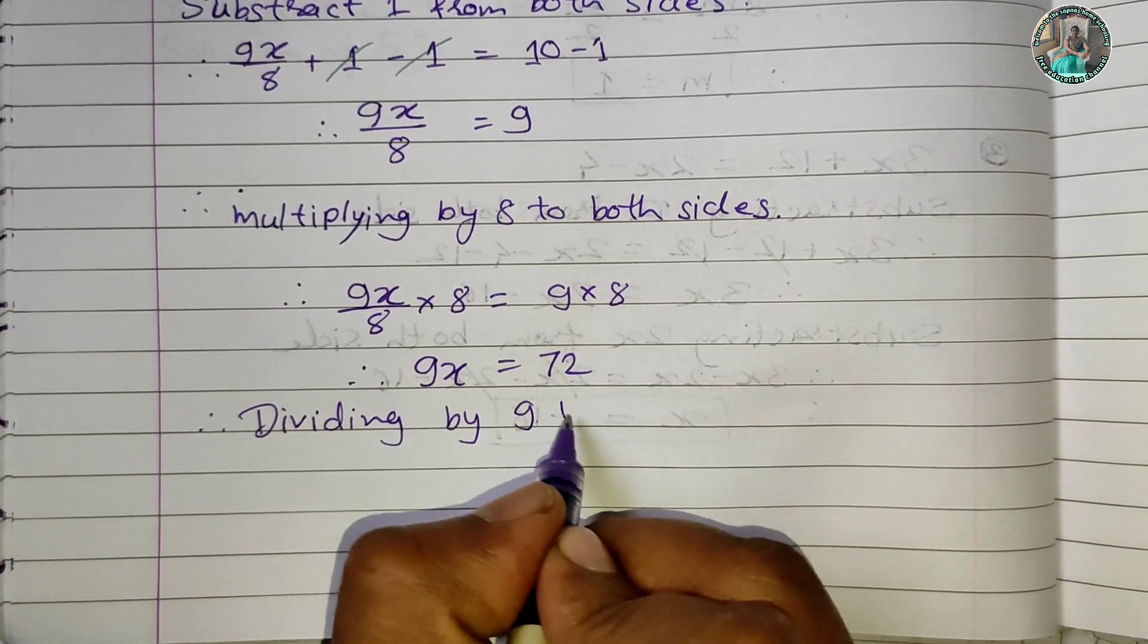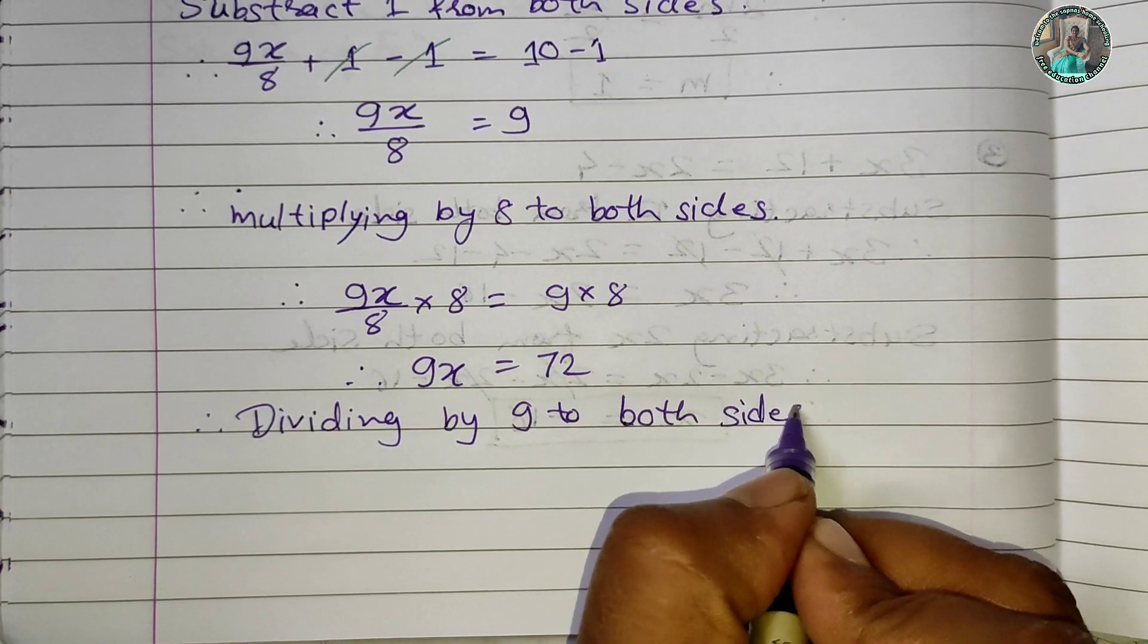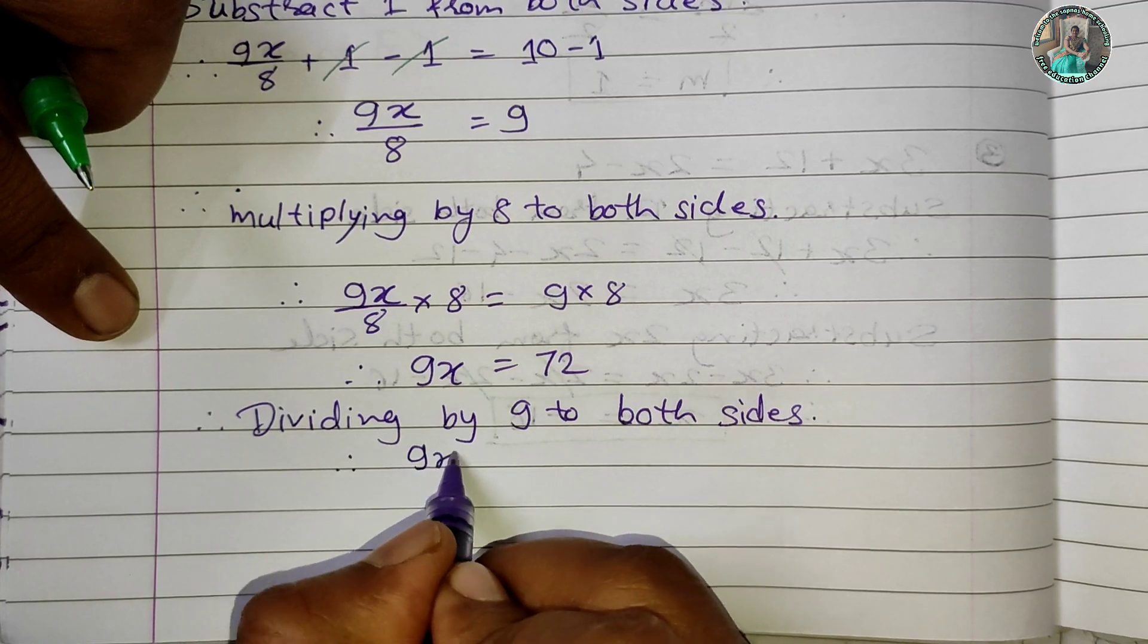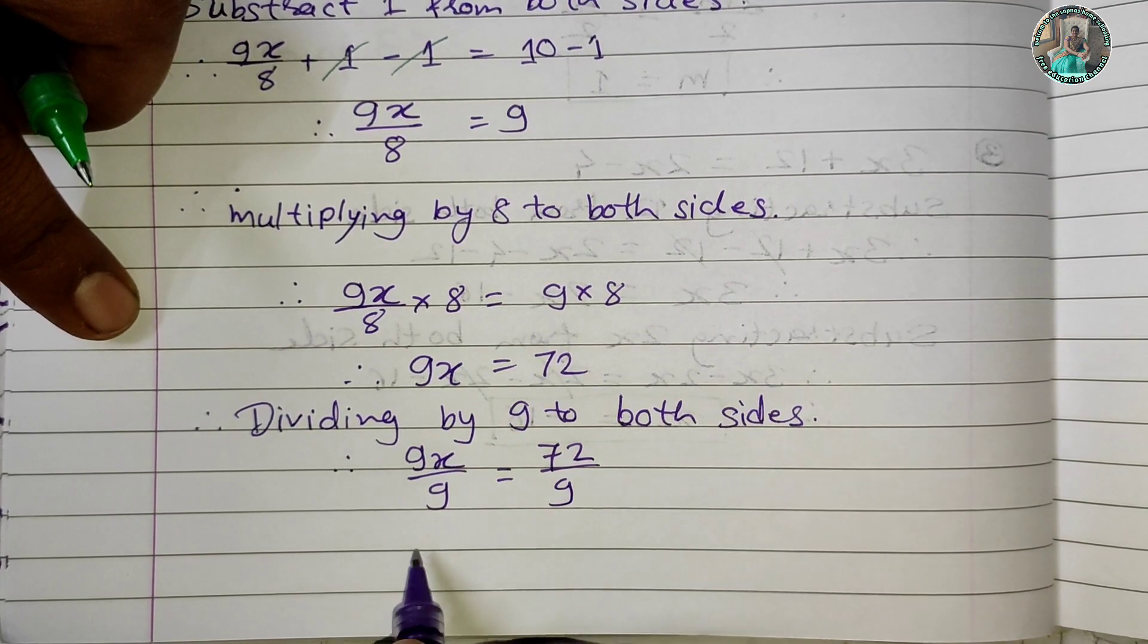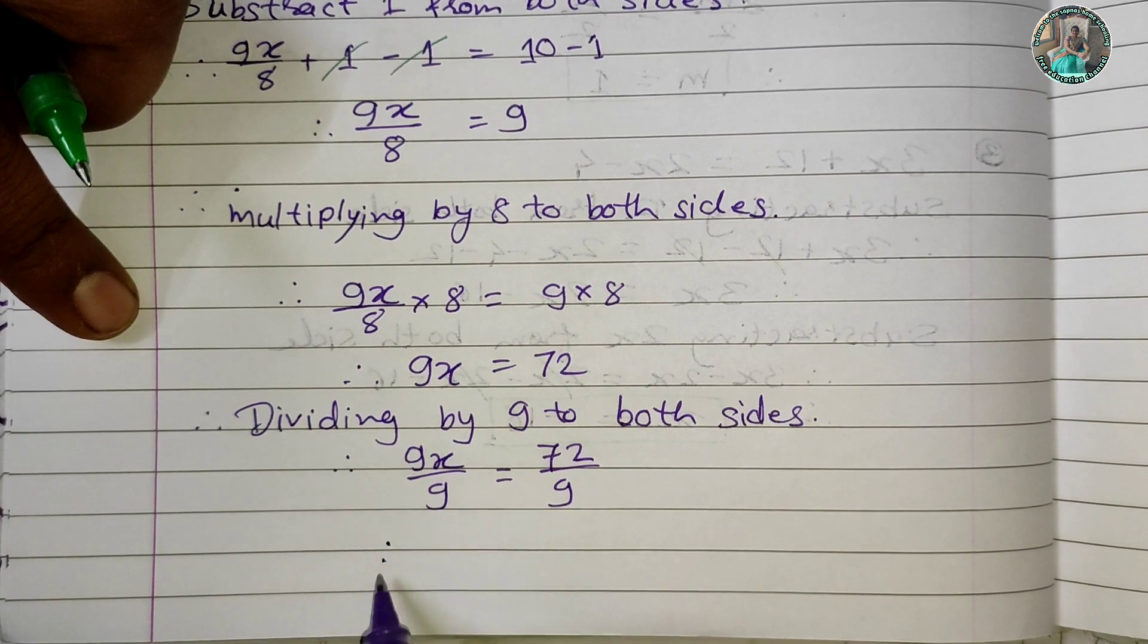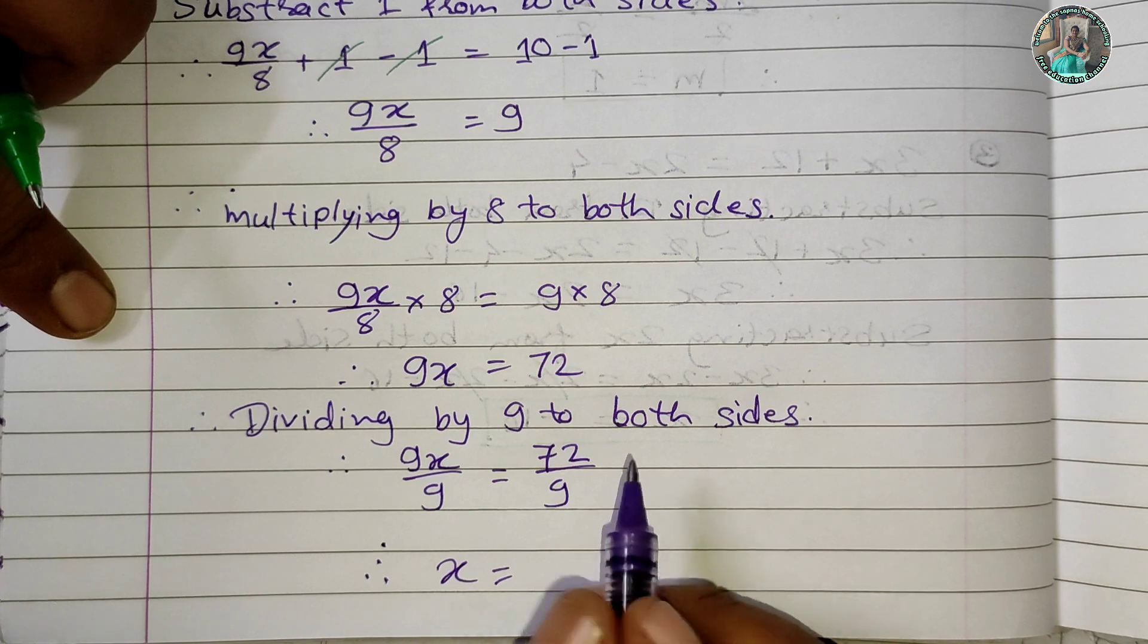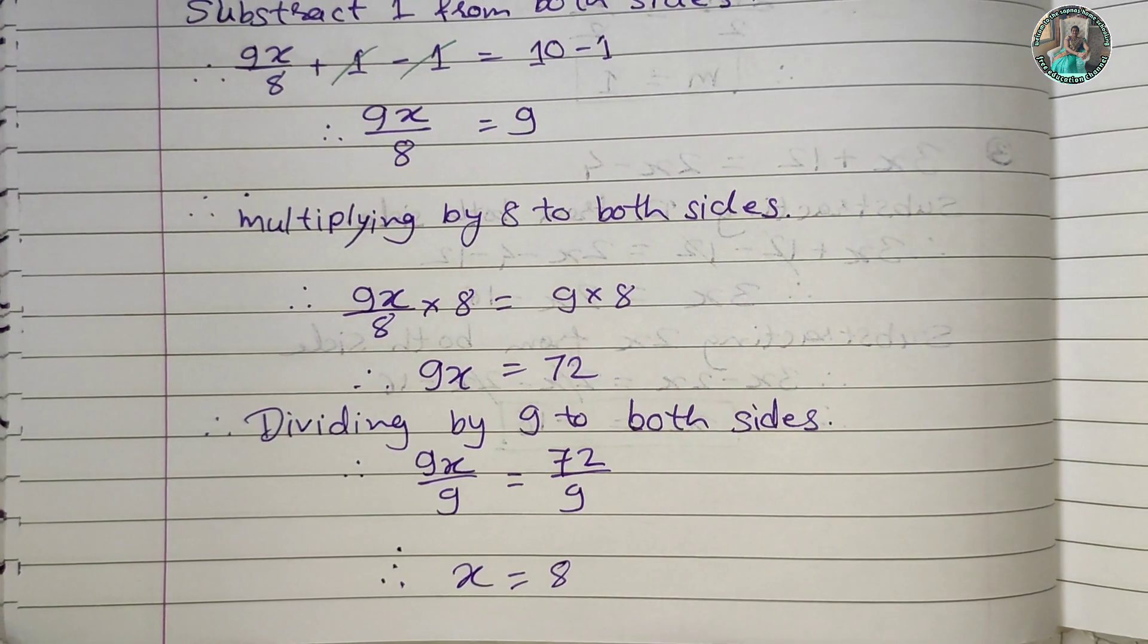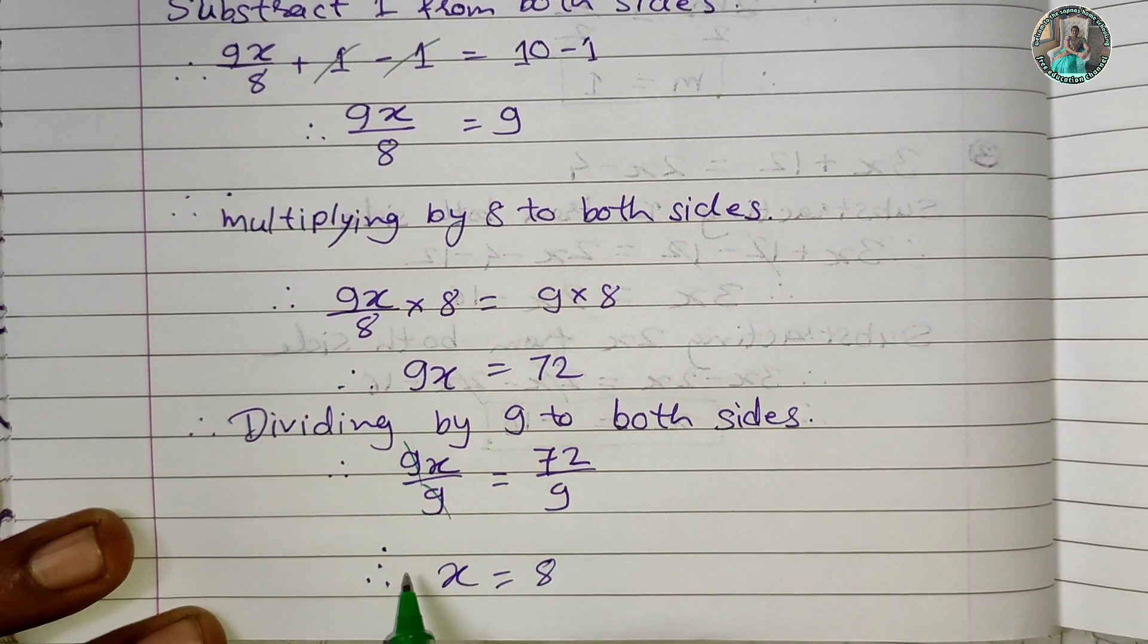Multiplying by 8 to both sides, then dividing by 9 to both sides: 9x/9 = 72/9. Therefore, x = 8. The x value is 8.